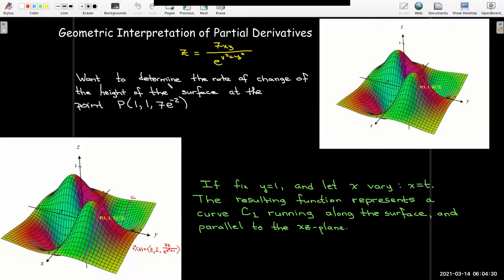So really we're trying to find something about the rate of change in the height of the surface, that's the z value, at the point on the surface with coordinates x equals 1, y equals 1, and z equals 7e to the negative 2 power. And you just get that z value by putting x and y equals 1 into the formula.